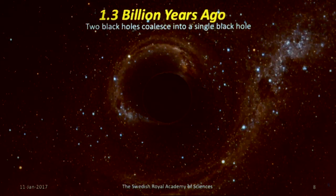The final black hole is bigger than the other two — about 60 times the mass of our sun.